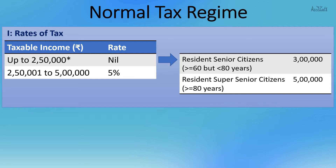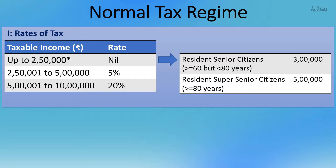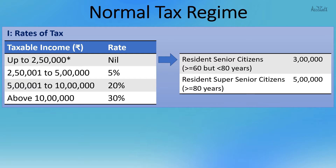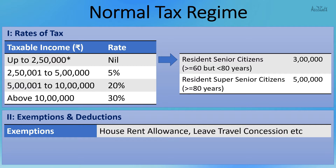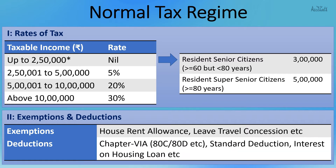Under the normal tax regime, for income more than 2.5 lakhs up to 5 lakhs, the rate of tax is 5%. For income more than 5 lakhs up to 10 lakhs, it is 20%. For taxable income more than 10 lakhs, the rate of tax is 30%. We can also avail exemptions like house rent allowance, leave travel concession, and deductions under Chapter 6A, plus a standard deduction of 50,000 rupees and deduction of interest on housing loan.